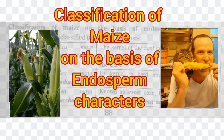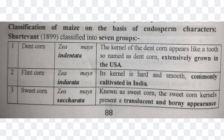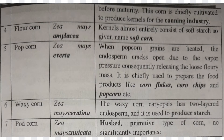This classification was given by Sturtevant in 1899, and he classified maize into seven different groups. They are: Dent Corn, Flint Corn, Sweet Corn, Flour Corn, Pop Corn, Waxy Corn, and Pod Corn.